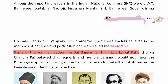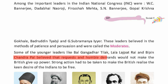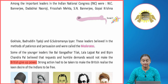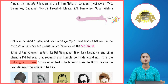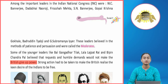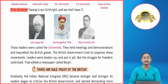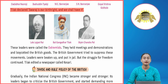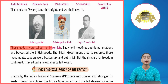Some of the younger leaders like Bal Gangadhar Tilak, Lala Lajpat Rai, and Bipin Chandra Pal were called the Extremists. Yeh teenon maantay thay ki humbleness se request karke Britishers ko force nahin kar sakte power give up karne ke liye — aisa koi extreme action uthana padega jis se Britishers force ho jayein. Tilak declared: 'Swaraj is our birthright and we shall have it.'